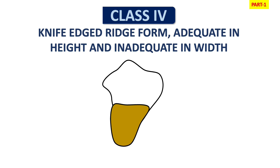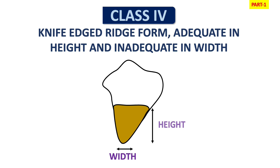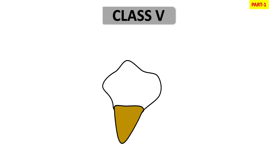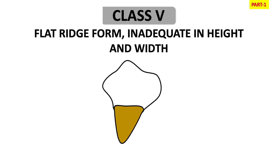In Class 4, ridges are knife-edge — adequate in height but inadequate in width. From Class 4 onwards there is a narrowing of width. As you can see in the figure, the ridge becomes knife-edge, meaning there is some resorption of height but extensive loss of width occurs in Class 4. The ridge anatomy in this case will still not complicate denture construction significantly.